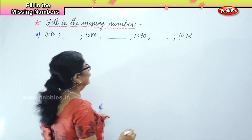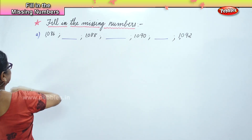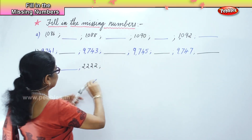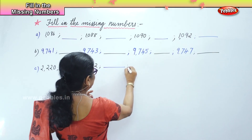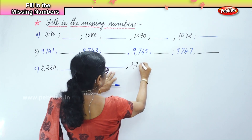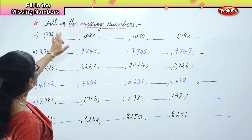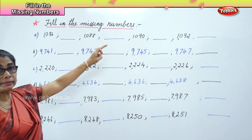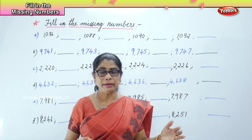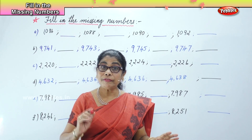You will look at the numbers and you will fill in the missing numbers, alright. Next, you've got to be very careful when you're filling in — look at the numbers correctly. Read the number, the first number given, read aloud, look at the thousands, hundreds, tens, ones — look carefully and write.